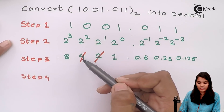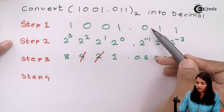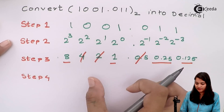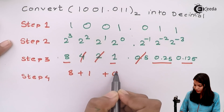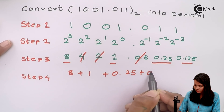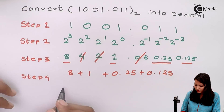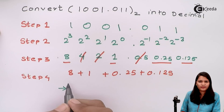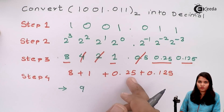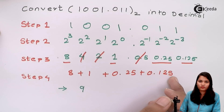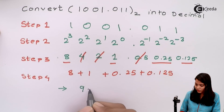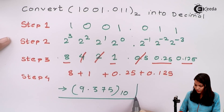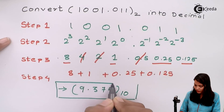Below the first 0, values 2 and 4 are cancelled. Below the second 0, 0.5 is cancelled. The remaining weightage values are 8, 1, 0.25, and 0.125. Adding these: 8 plus 1 is 9, and 0.25 plus 0.125 gives 0.375. Therefore the final decimal value is 9.375.